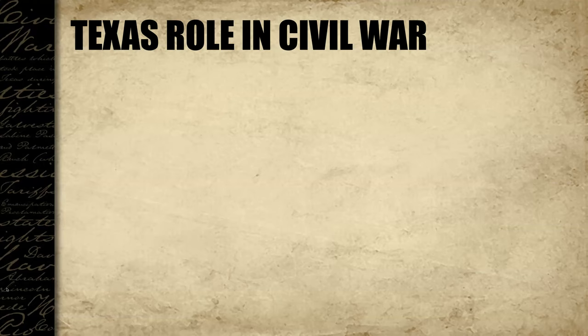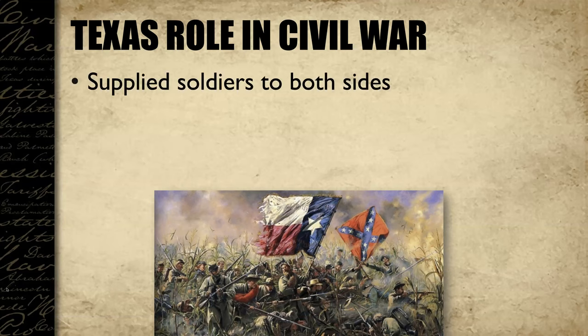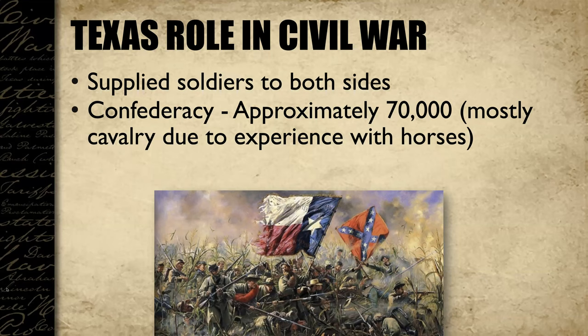What role did Texas play in the war? First, Texas supplied soldiers to both sides. Texas was a slave state, so a majority of soldiers from Texas fought for the Confederacy — approximately 70,000 fought mostly in the cavalry due to their experience with horses. Cavalry are soldiers trained to fight on horseback. Because Texas was such a large state and it seemed like everybody had a horse, and because of their horsemanship, most Texas soldiers served in the cavalry.